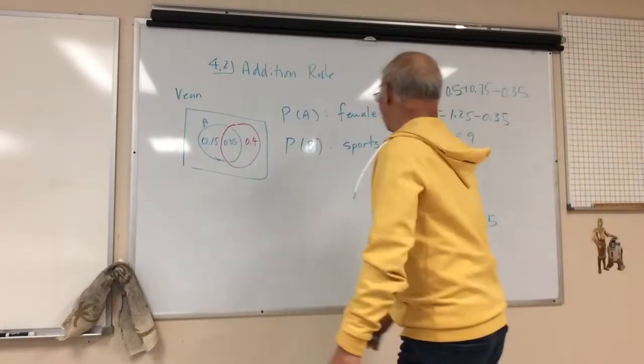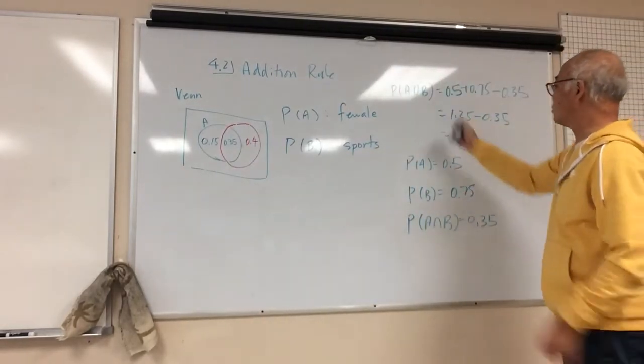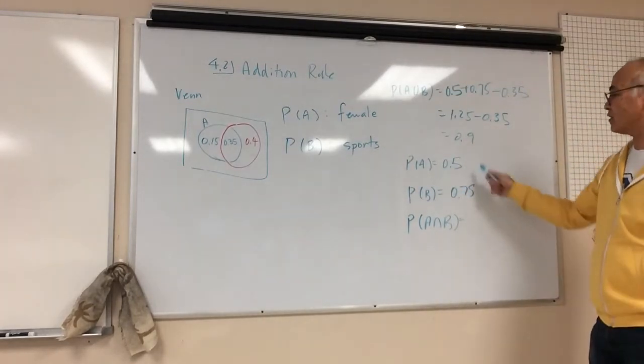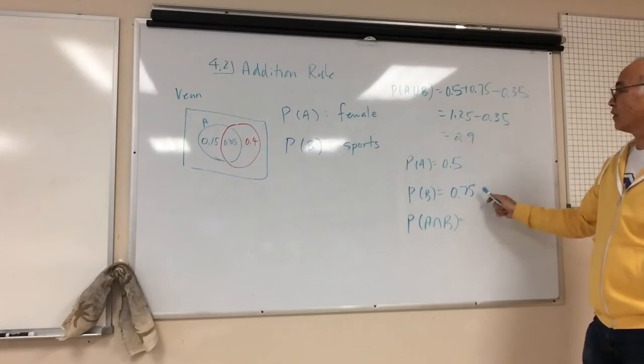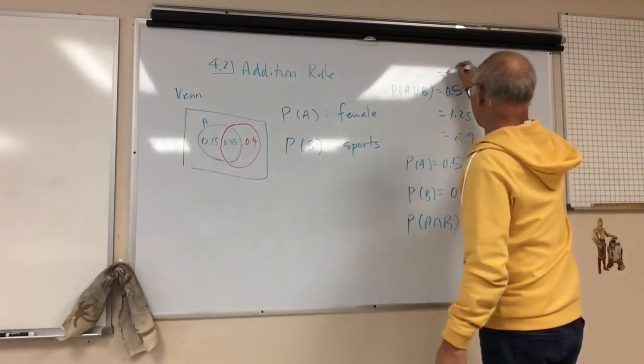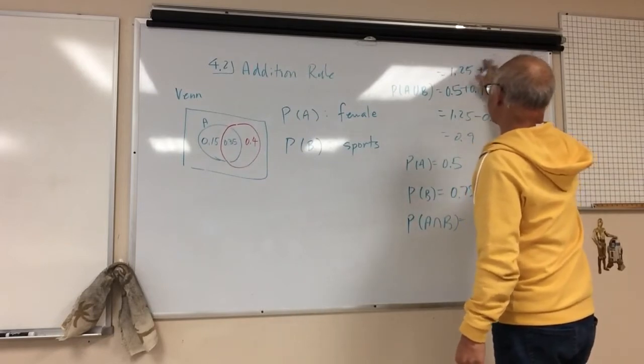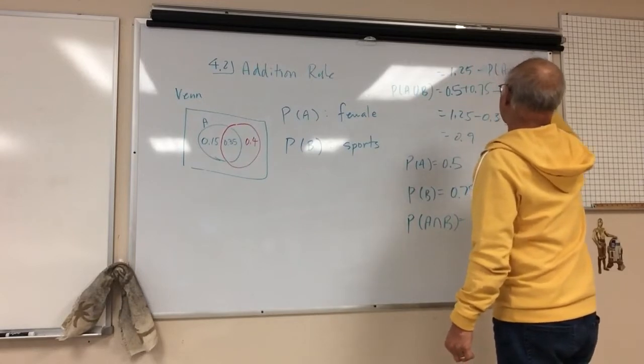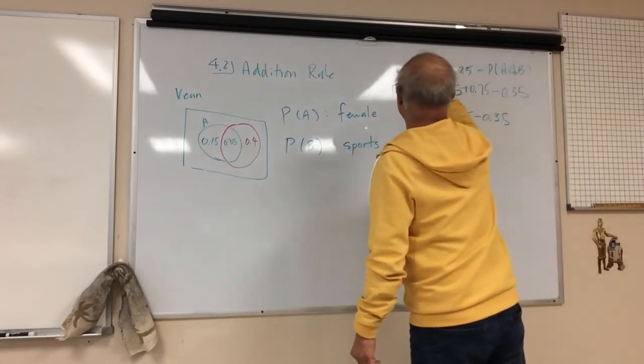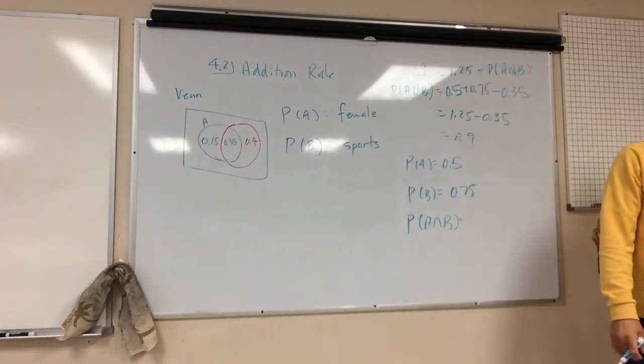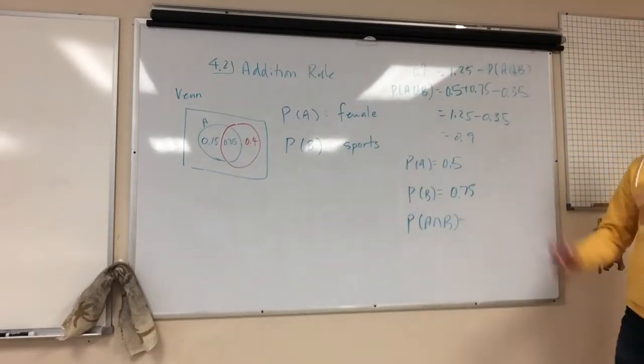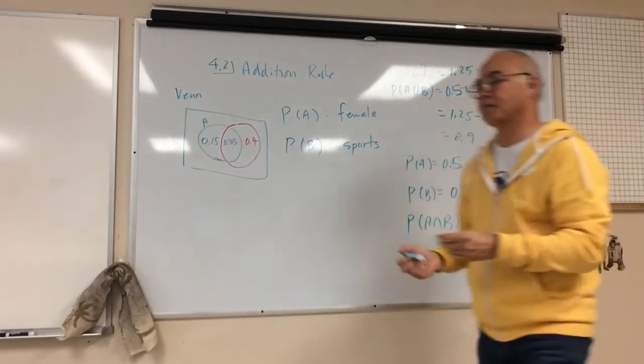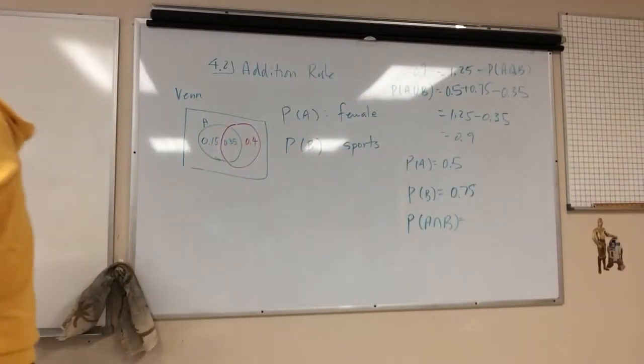How would you figure that out then? So if I gave you this and this and I told you this and I said figure this out, then you would have to add these two. So if you added these two, it would be 1.25 minus I don't know what this guy is, right? And this equals 0.9. This is the kind of situation you would have to figure this guy out.